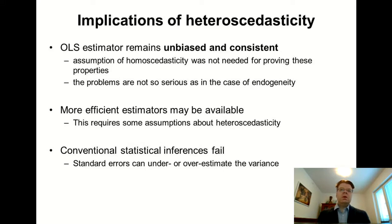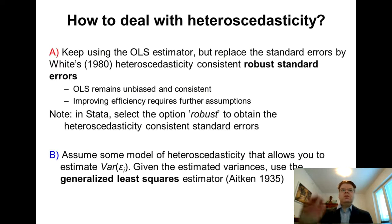However, remember also that conventional statistical inferences fail because the standard errors can under- or over-estimate the variance. In some sense, the simplest way to deal with heteroscedasticity would be to correct for the standard errors and continue to rely on the point estimates of the OLS. The option A is that we could still keep using the OLS estimator, however correct for the heteroscedasticity in the standard errors.